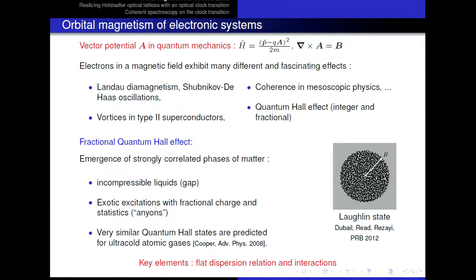It's also a very important tool to study coherence in mesoscopic physics, vortices in type 2 superconductors, and maybe most importantly for my purpose, also various quantum Hall effects. And so, you know that quantum Hall effects come in two varieties, integer and fractional. What I want to advertise here is a fractional version, because it corresponds to the emergence in two-dimensional electron gases of strongly correlated phases of matter, what Norbert Schultz called quantum matter yesterday. And so, they are characterized by an energy gap, meaning that they form incompressible liquids.